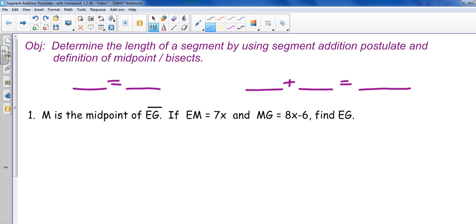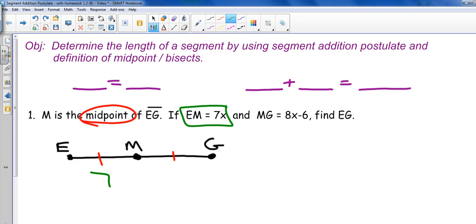First thing we're going to do is start with a picture. M is the midpoint of EG. So you should already be drawing on your page. EG, M is the midpoint. I'm going to make a good habit of marking my picture. Whenever I read that word midpoint, that means that M is not just somewhere between E and G, but exactly in the middle. So I'm going to mark it with those tick marks to indicate that. Let's go ahead and put our expressions on there. EM is 7X, MG is 8X minus 6. And that's all the given information that I have.